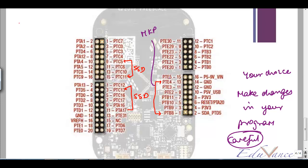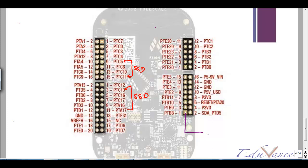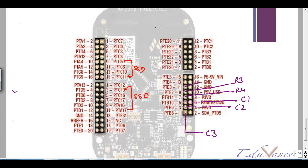We will be using PTB8, PTB9, PTB10, PTB11, PTB2, PTB3, PTB4. I am going to connect PTB8 to C3, PTB9 to C2, PTB10 to C1, PTB11 to R4, PTB2 to R3, PTB3 to R2 and PTB4 to R1. Again this is my choice — you can choose to have it differently.